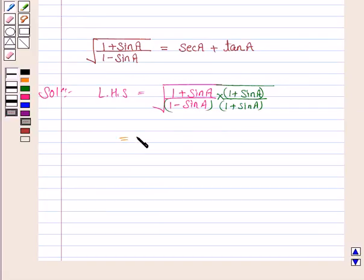This becomes square root of 1 plus sine A whole square upon 1 minus sine A into 1 plus sine A, which is 1 minus sine square A. We have used the formula of A minus B into A plus B, which is equal to A square minus B square.